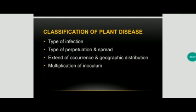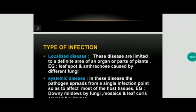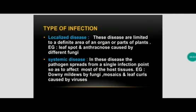Classification of plant disease — plant diseases are classified based on: the type of infection, then based on the type of perpetuation and spread, then based on the extent of occurrence and geographic distribution, and finally multiplication of inoculum.